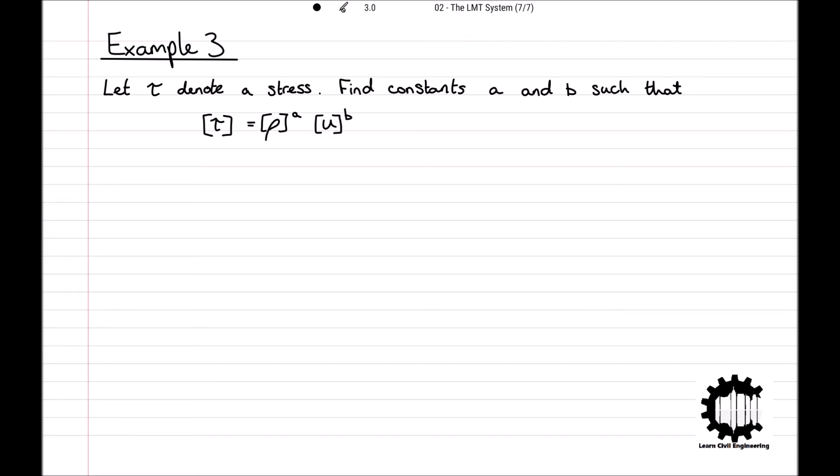Where U is the velocity and rho denotes mass density, with the dimensions of rho equaling ML to the power of minus 3. Pause the video here and give this question a go.